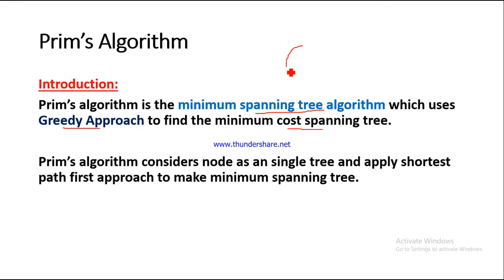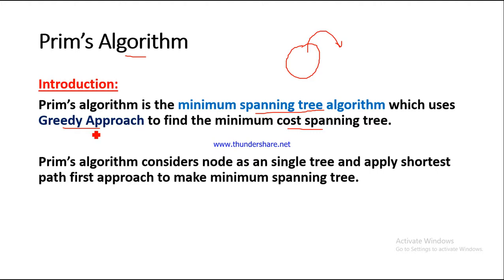Suppose we have a given graph and from this graph we have to derive a minimum spanning tree which should contain the minimum cost. Our goal is to find the minimum cost spanning tree. This algorithm works on the greedy approach — greedy approach is basically where the goal is to get maximum profit or to reduce the effort. Prim's algorithm considers a node as a single tree and applies a shortest path first approach to make the minimum spanning tree.